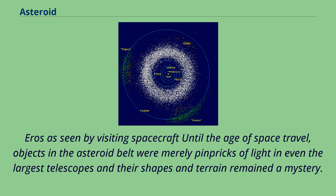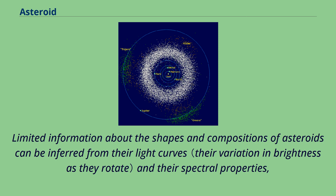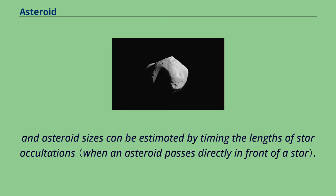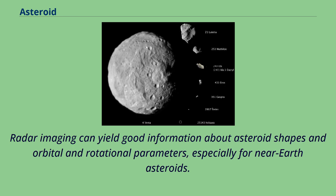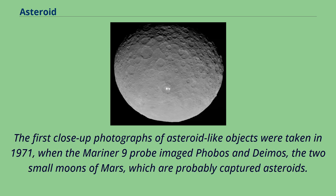Until the age of space travel, objects in the asteroid belt were merely pinpricks of light and even the largest telescopes could not reveal their shapes and terrain. The best modern ground-based telescopes and the Hubble Space Telescope can resolve a small amount of detail on the surfaces of the largest asteroids. The first close-up photographs of asteroid-like objects were taken in 1971, when the Mariner 9 probe imaged Phobos and Deimos, the two small moons of Mars, which are probably captured asteroids.